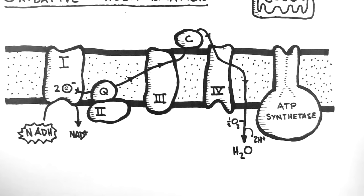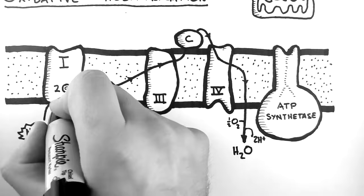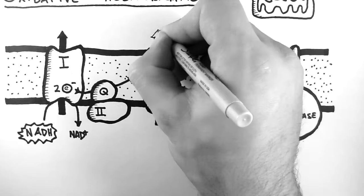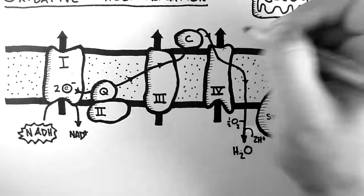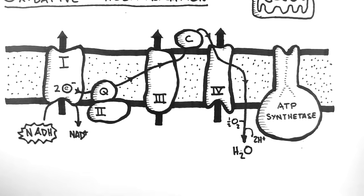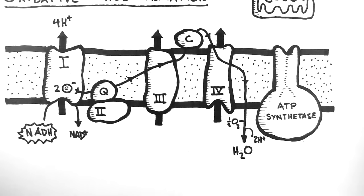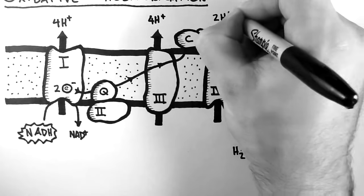Now as the electrons are passed between the complexes, they pump protons out of the mitochondrial matrix into the intermembrane space like this. Complex 1 pumps out 4 protons, complex 3 pumps out 4 protons, and complex 4 pumps out 2 protons.